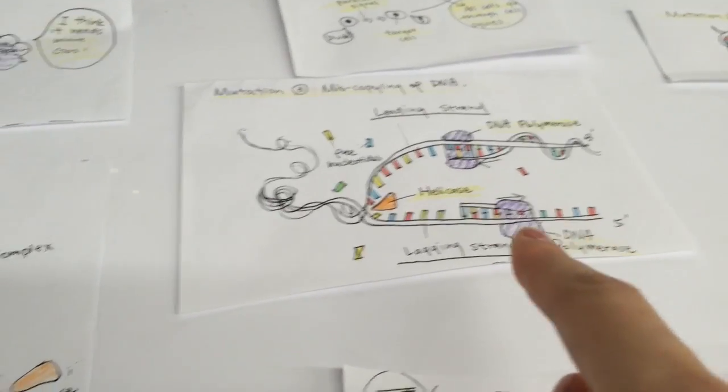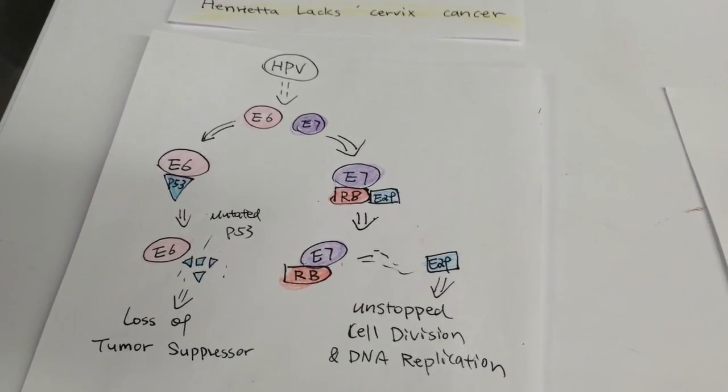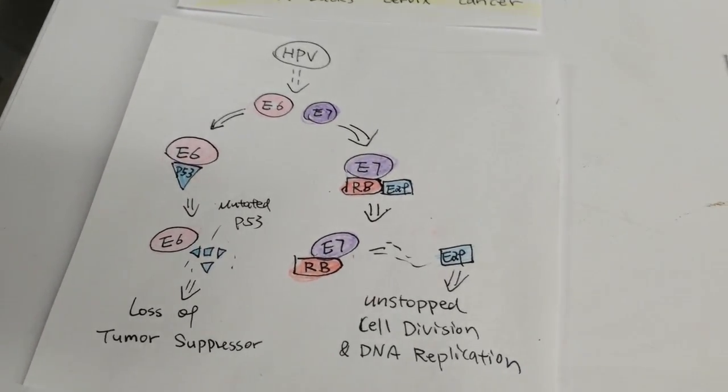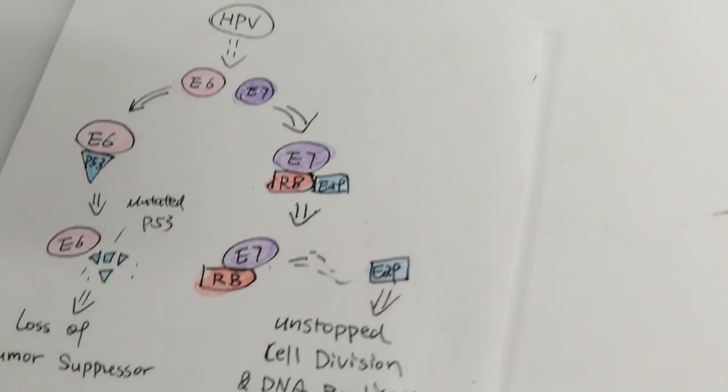With the two proteins, HPV manages to both mutate the gas and the brake of the cell cycle, leading the cells towards a cancerous state. And that's why the tumor started to grow on Henrietta's cervix.